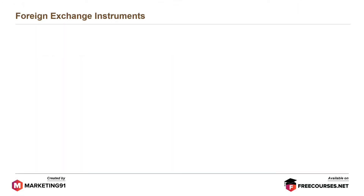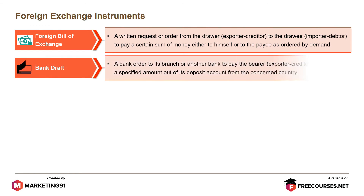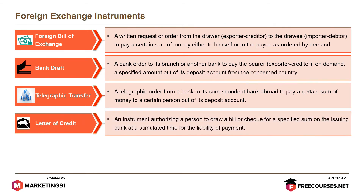Foreign exchange instruments include: foreign bill of exchange — a written request or order from the drawer (exporter or creditor) to the drawee (importer or debtor) to pay a certain sum of money on demand; bank draft — a bank order to its branch or another bank to pay the bearer (exporter or creditor) on demand a specified amount from its deposit account; telegraphic transfer — a telegraphic order from a bank to its correspondent bank abroad to pay a certain sum to a certain person; and letter of credit — an instrument authorizing a person to draw a bill or check for a specified sum on the issuing bank at a stipulated time.